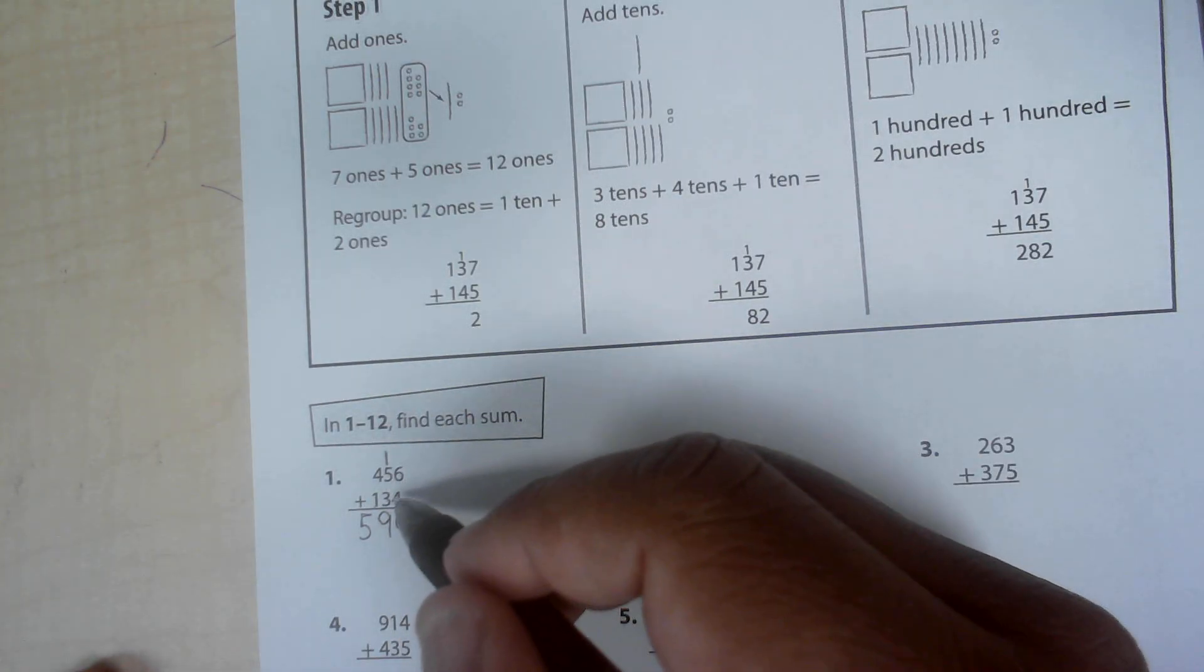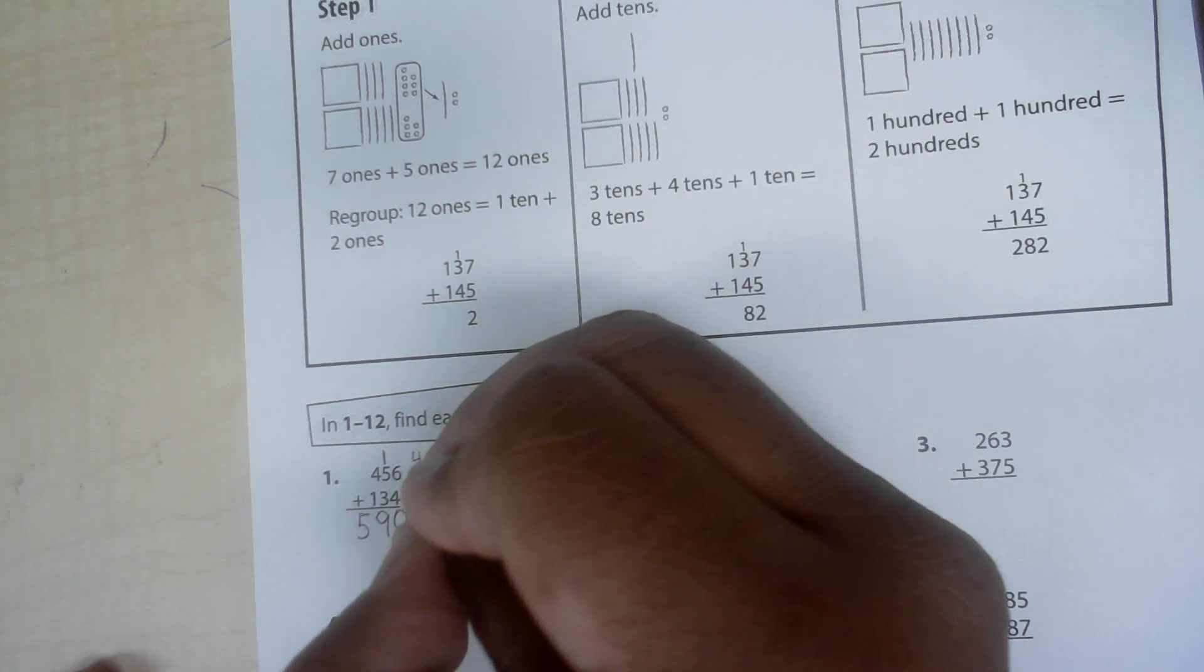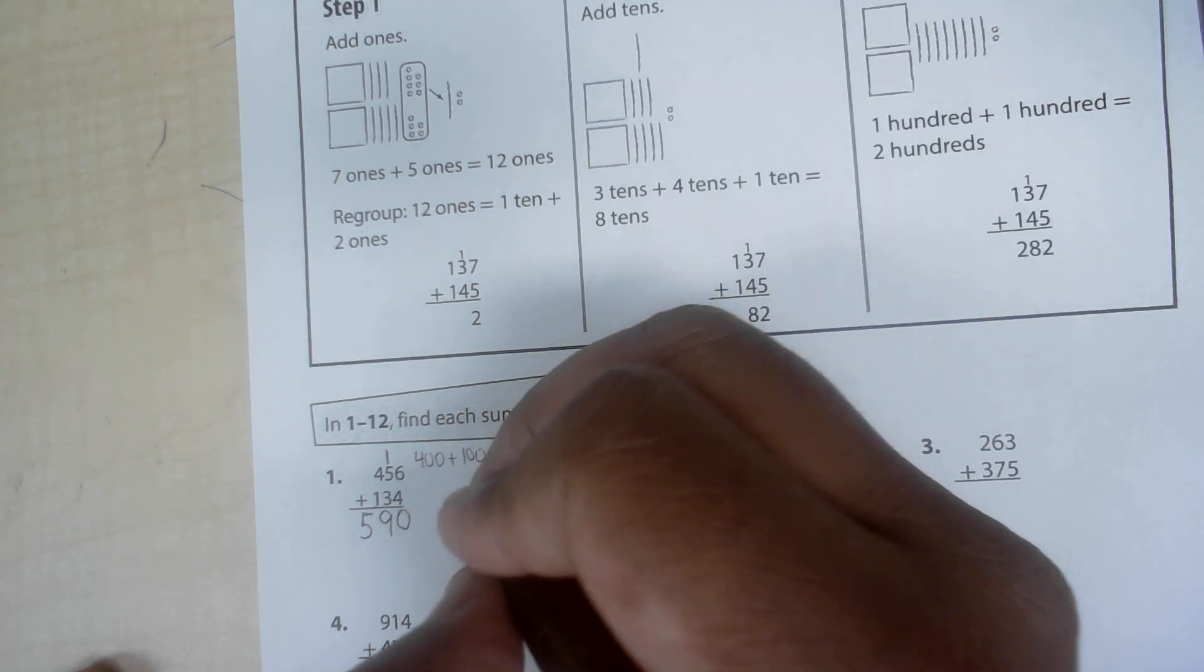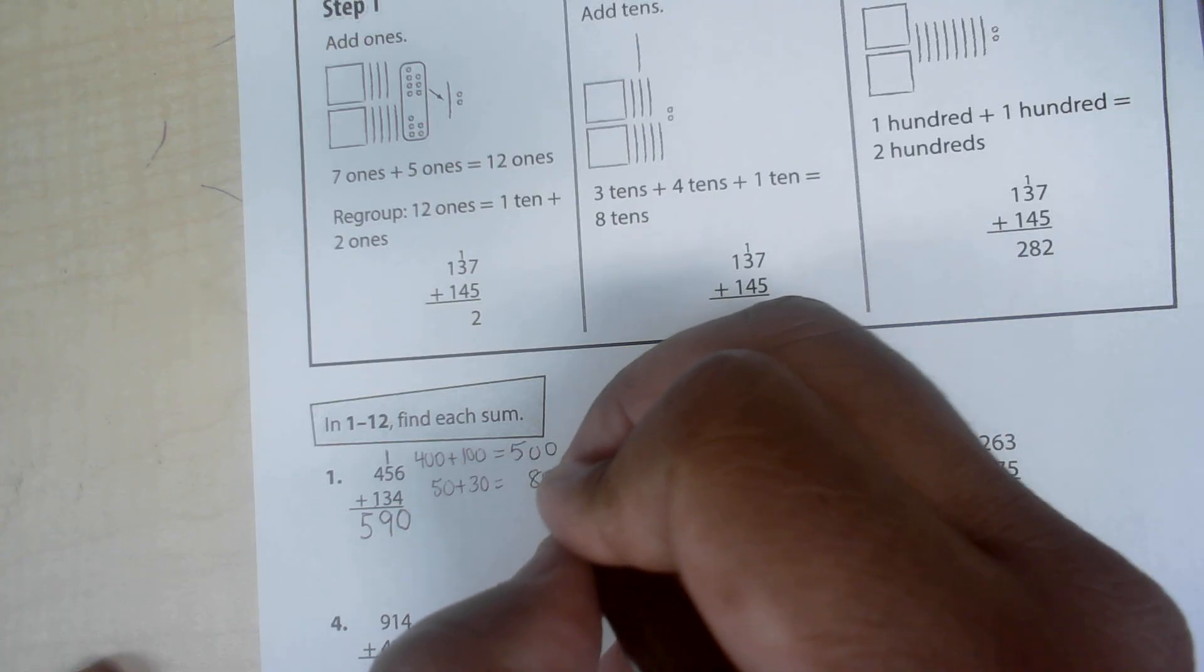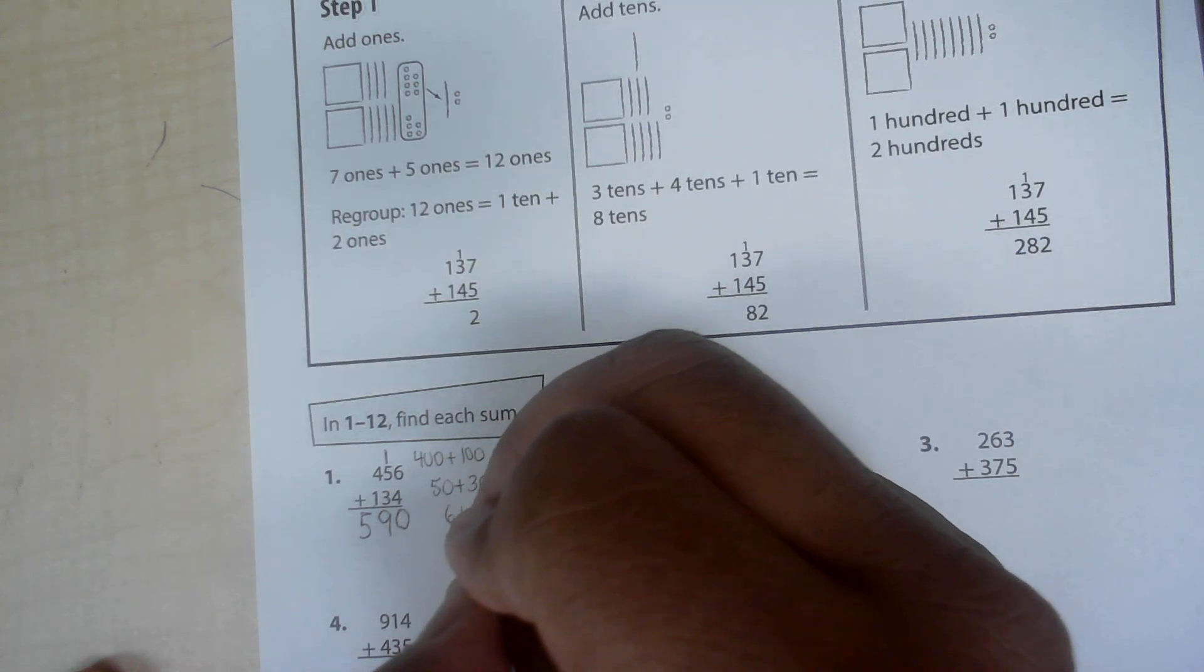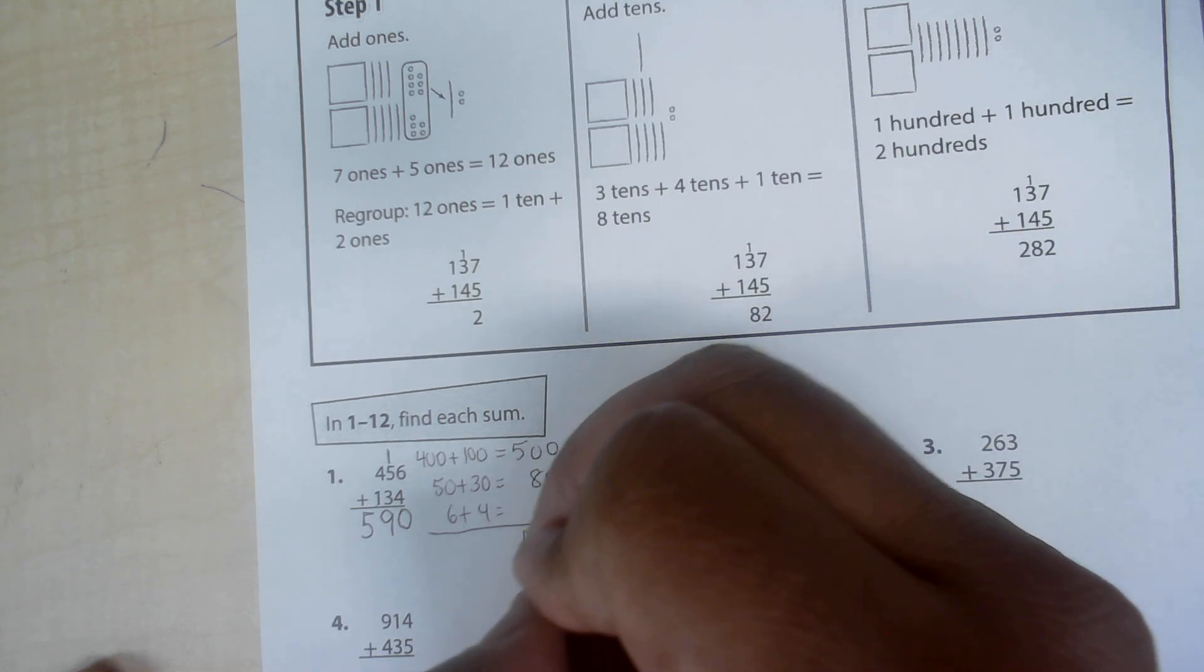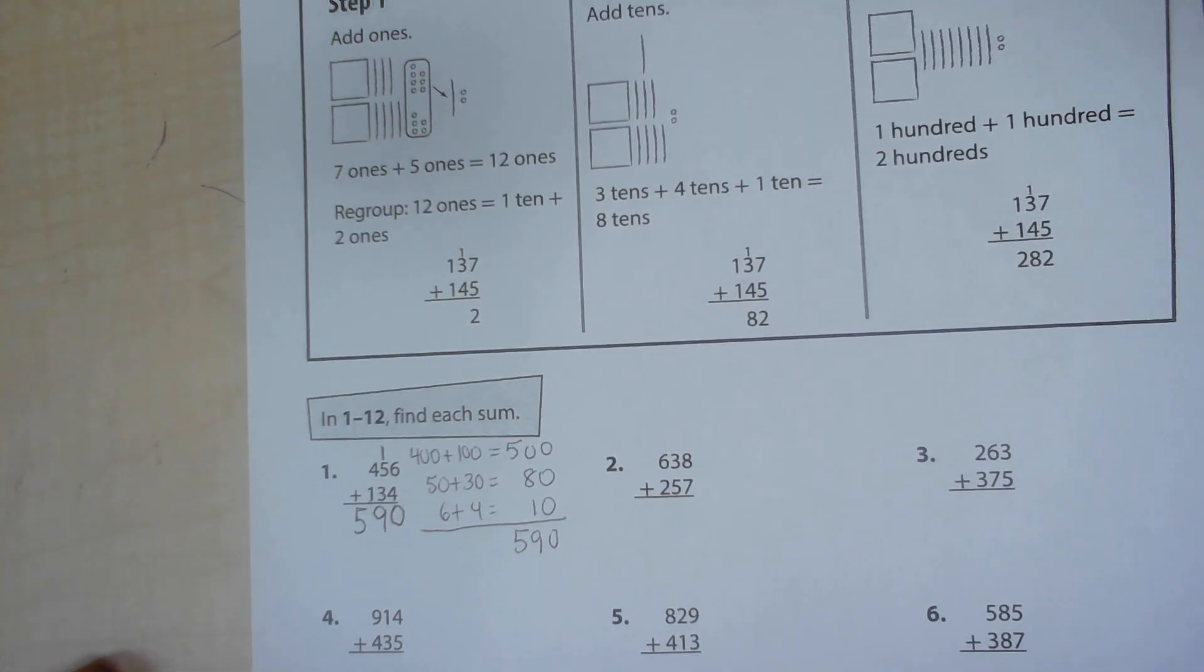The other way you can add this is add by place. We can add 400 plus 100. That's 500. And then we have 50 plus 30 is 80. And then six plus four is 10. If we add that up, we have 590. So we get the same answer either way.